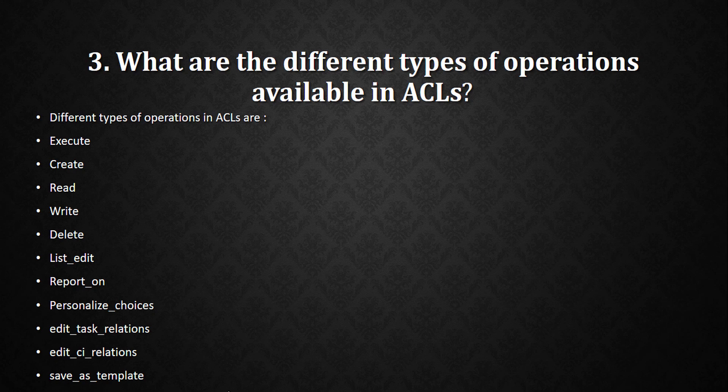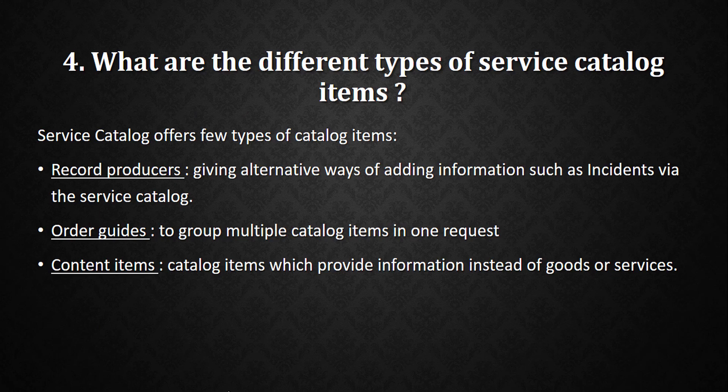The next question is: what are the different types of service catalog items? There are three basic types: first is Record Producer, second is Order Guides, and third is Content Items. When giving your answer, first say 'Record Producer' then give the definition if asked: it provides an alternative way of adding information such as incidents via the service catalog. For Order Guide: it groups multiple catalog items in one request. For Content Items, give the definition only if asked.